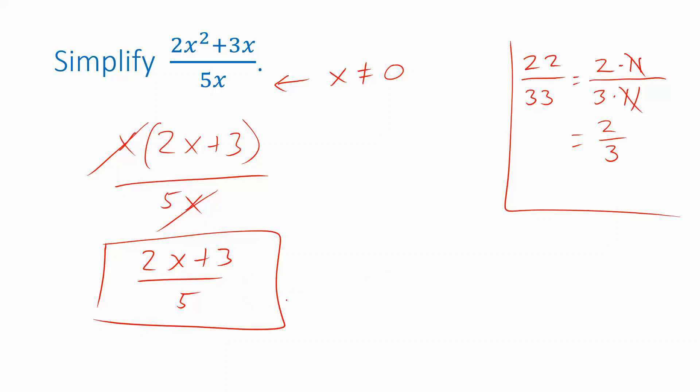In order to be careful about that, in order to make sure that we don't simplify and then end up thinking we're allowed to do something we're not, we should make note of the fact that we simplified something where we were not allowed to plug in 0. So we should write that down as a restriction on what we're allowed to plug in even after we simplify.